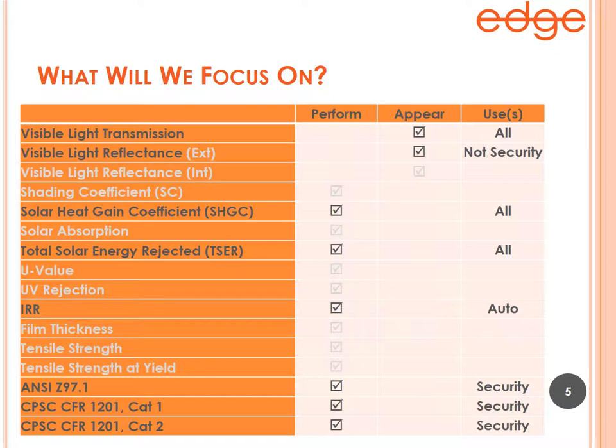You might think the most important specs are those that appear on everything. In some cases that's true — visible light transmission and visible light reflectance appear on everything, or nearly everything including security film, because they're important characteristics of what the film will look like. Solar heat gain coefficient and total solar energy rejected are also very important performance characteristics of every film in the Edge line.